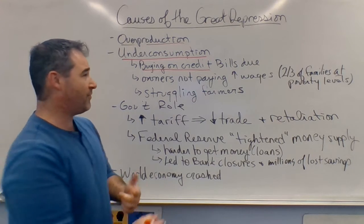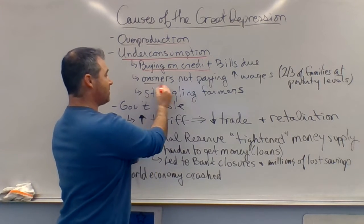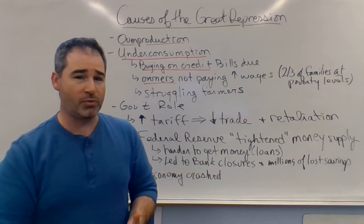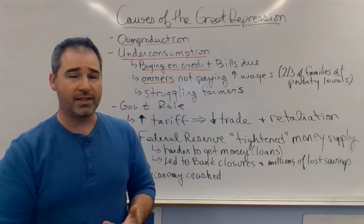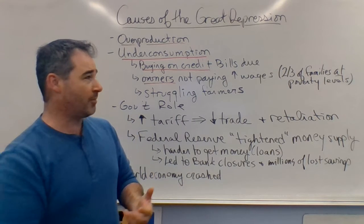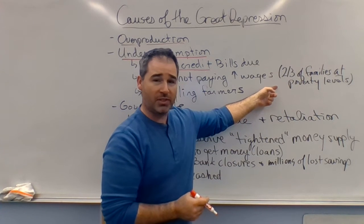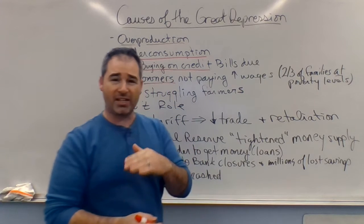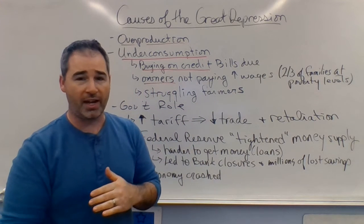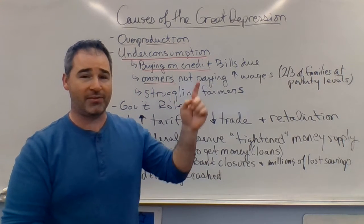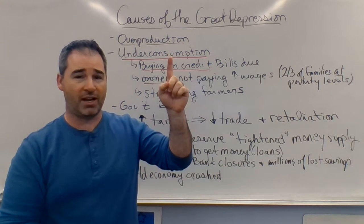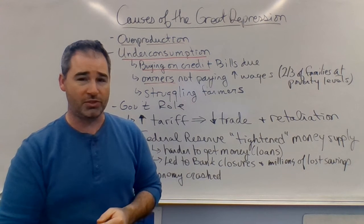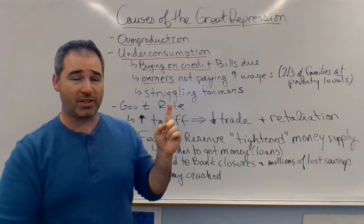Factory owners and business owners weren't paying livable wages. When the stock market crashed, two-thirds of families were living at the poverty level — making just enough to survive — which means they didn't have enough to purchase all of the stuff that was being overproduced.